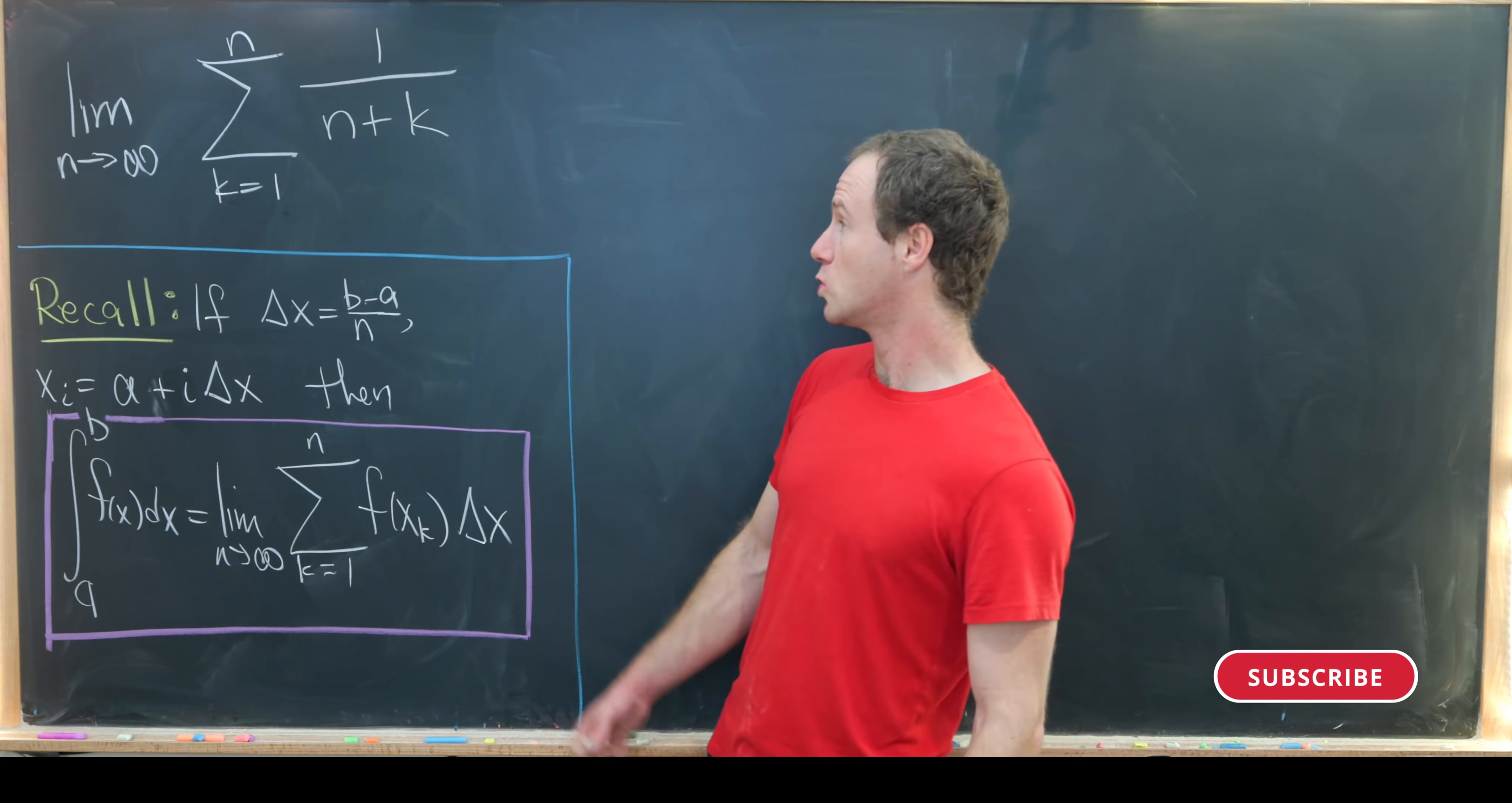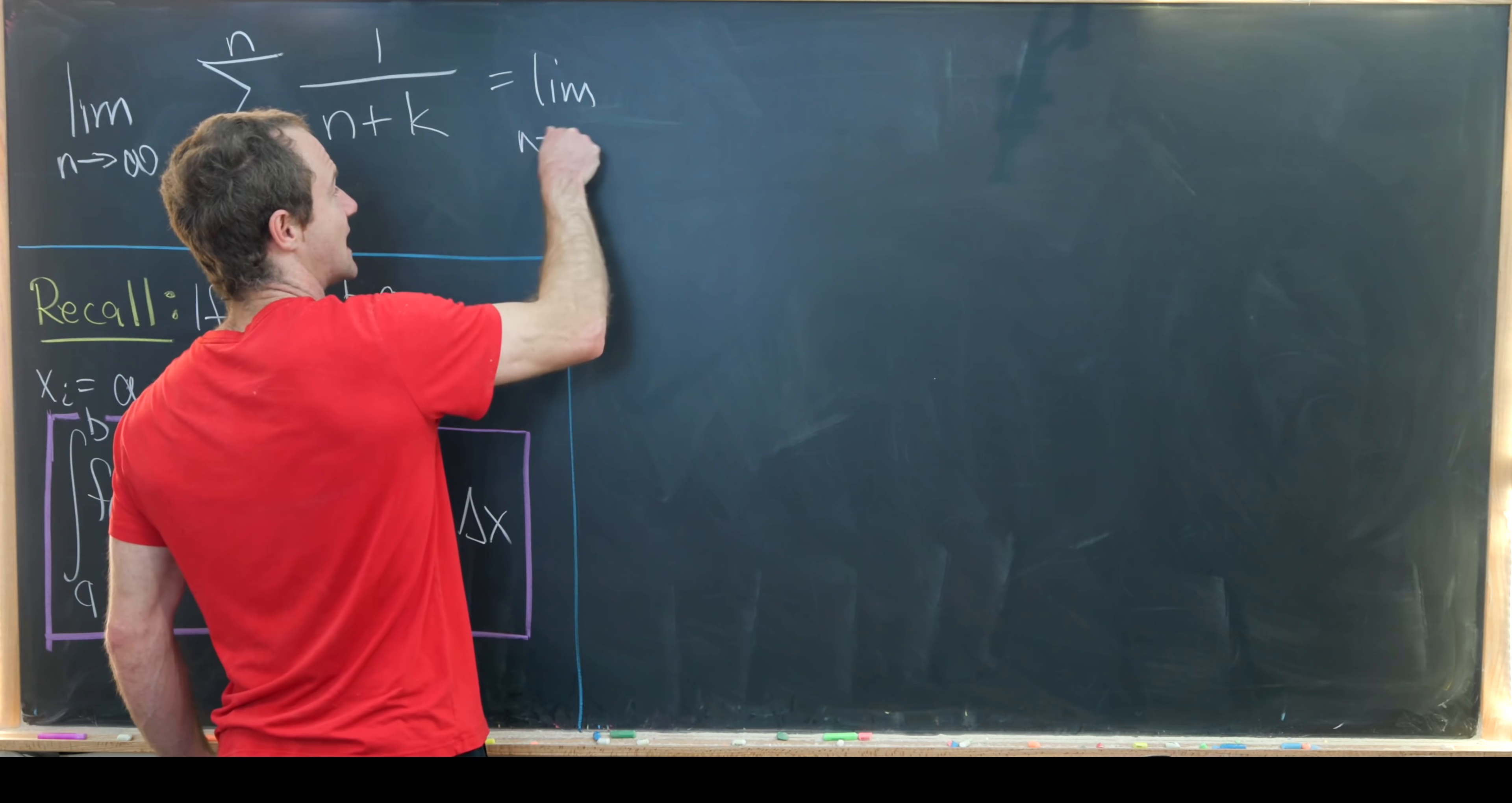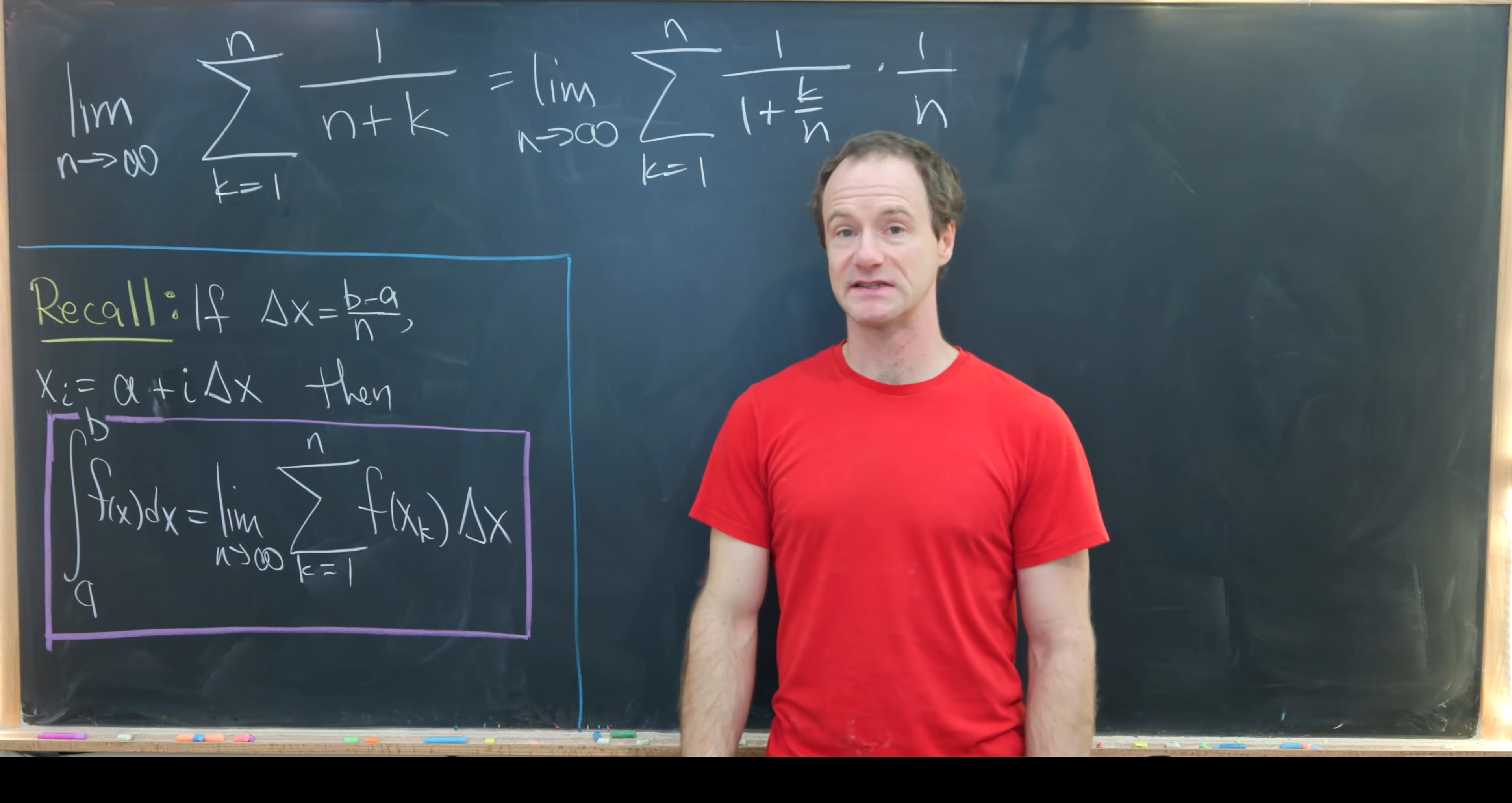Our goal is to try to make this limit of a sum look like the right-hand side of this equation so that we can write it in terms of the left-hand side. Probably the first thing that we want to do is factor an n out of the denominator. That's going to give us the limit as n approaches infinity of the sum k going from 1 to n of 1 over 1 plus k over n times 1 over n.